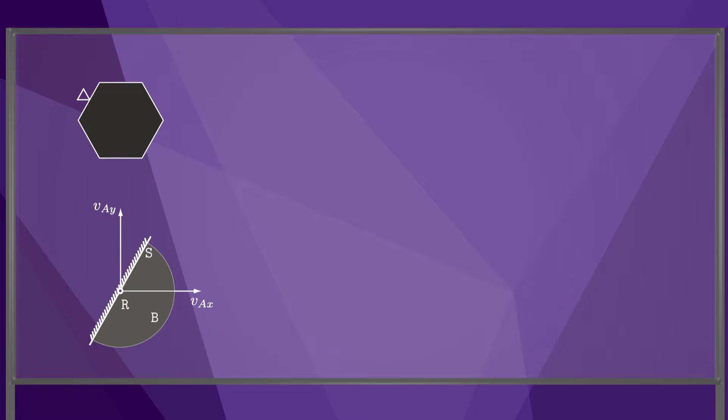This is a simple example from the previous video. The hexagon can translate in the plane but not rotate, so its twist has only two linear components.